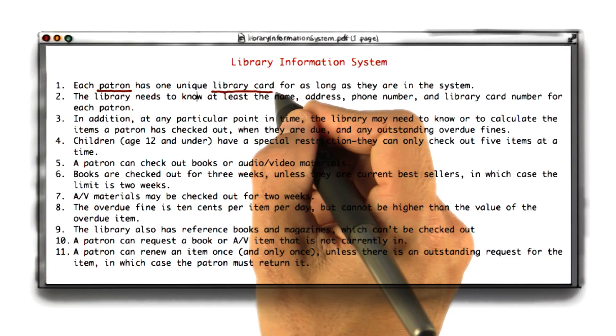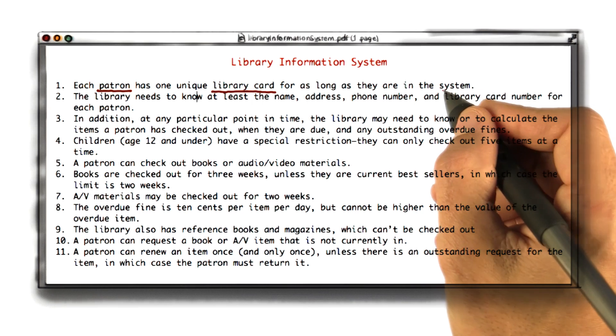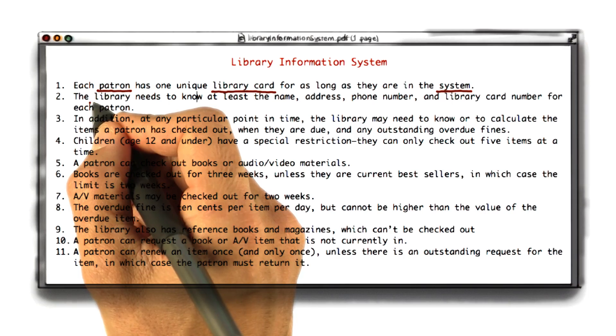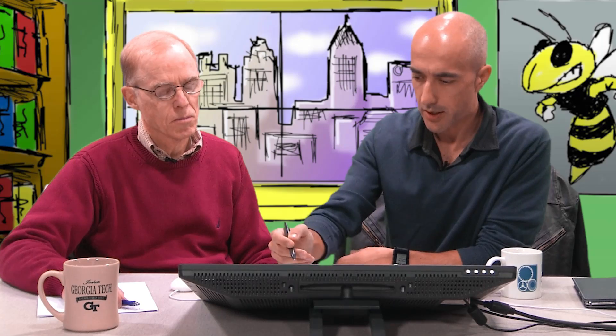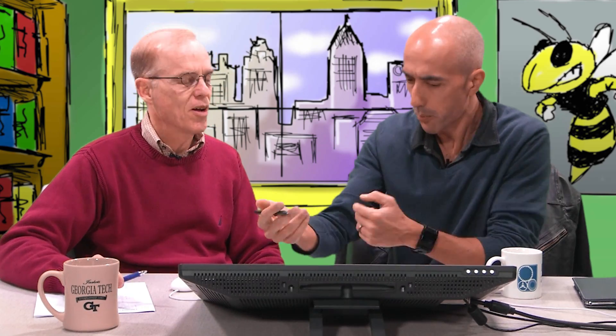Library card also seems to be a relevant element — every patron has a library card — so we'll just create a library card class. There's also this concept of system and library, but based on my experience, those are kind of overarching themes; that's really what we are modeling. It would only matter if there were more than one library or more than one system, but since we just want one system for our one library, I won't even represent those — they're an implicit concept.